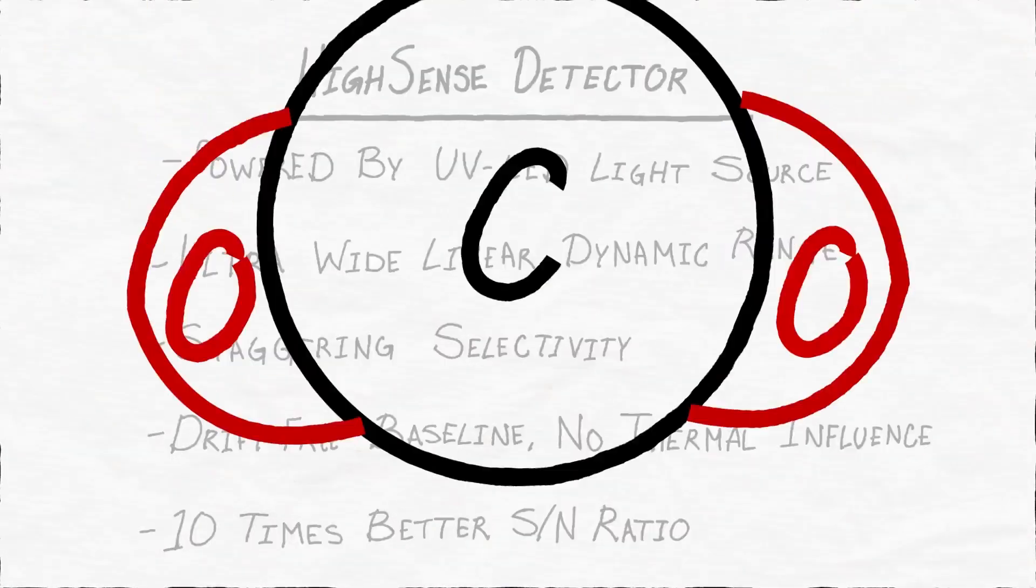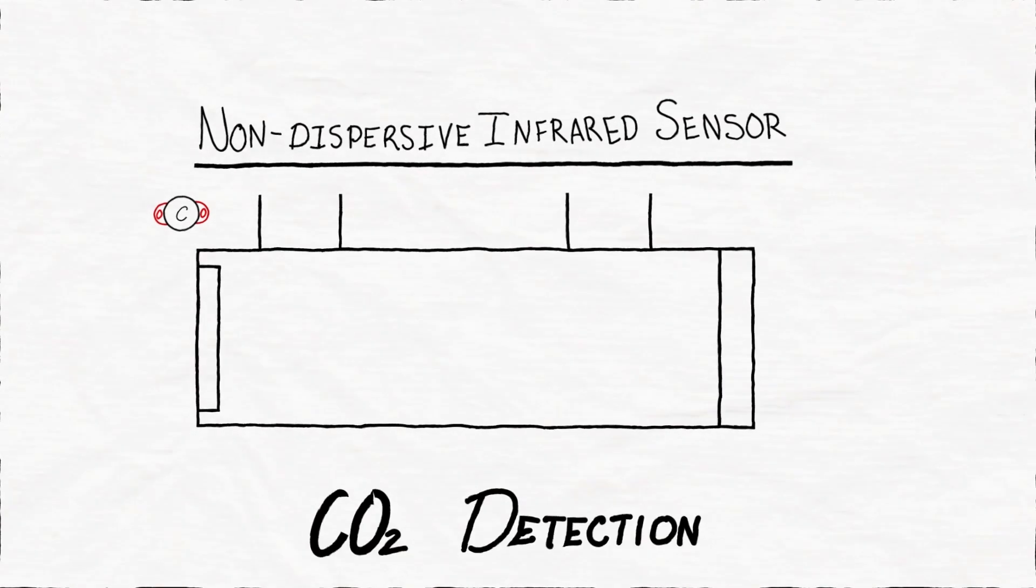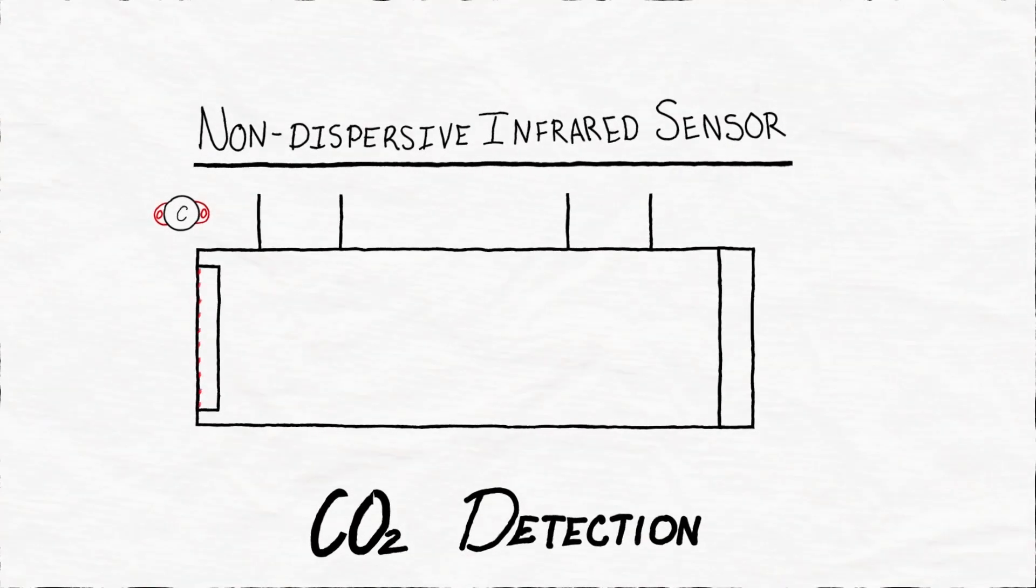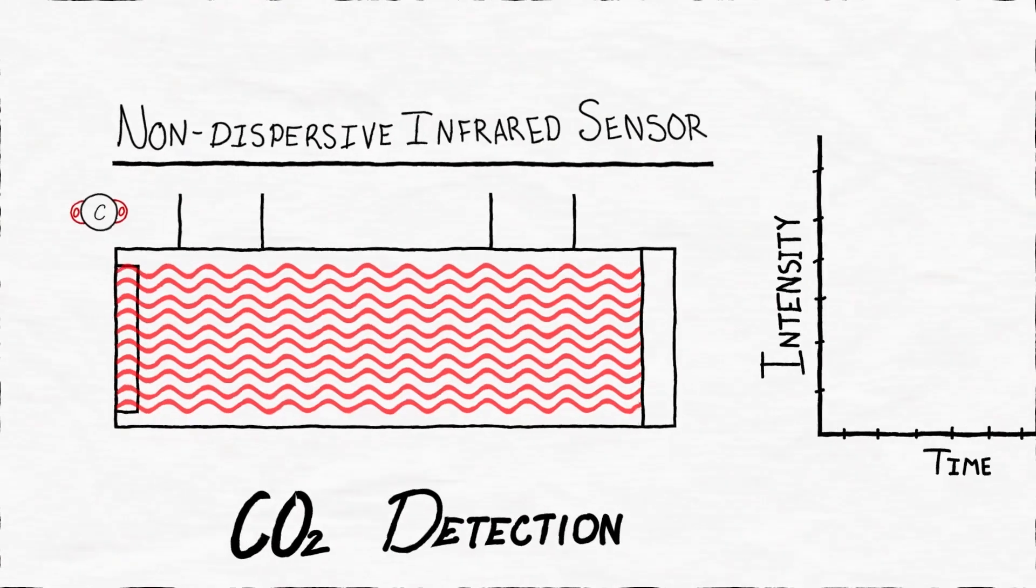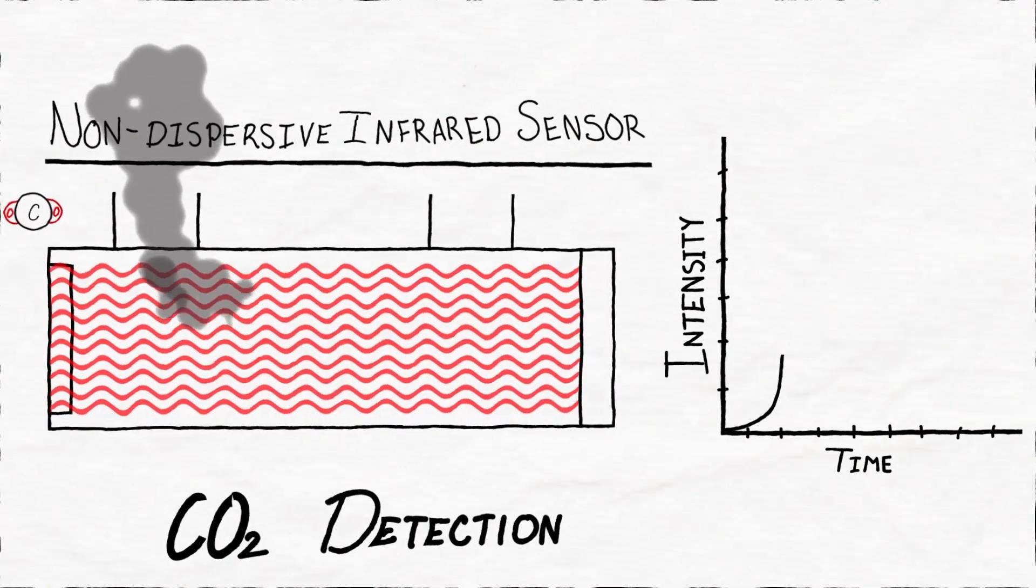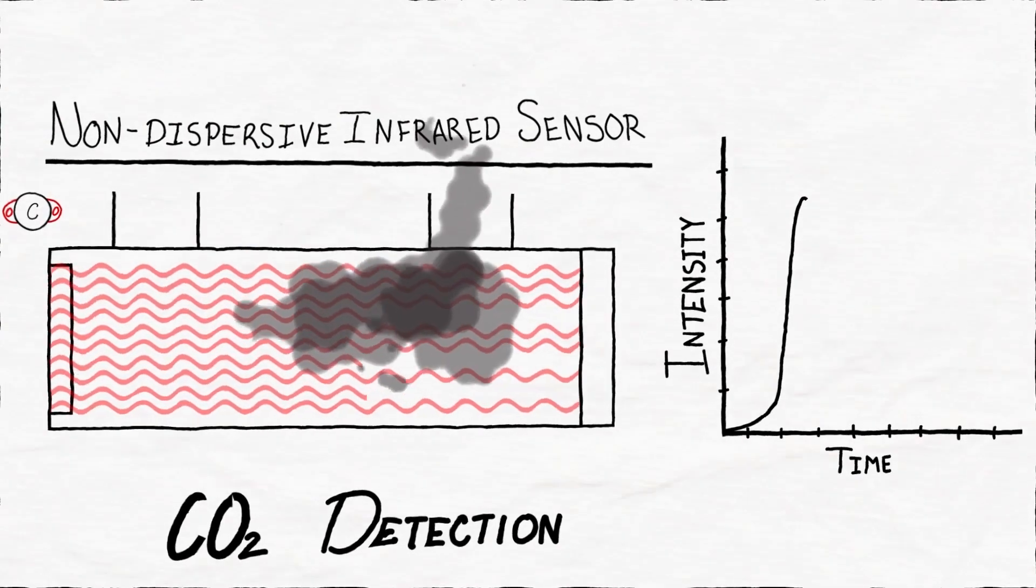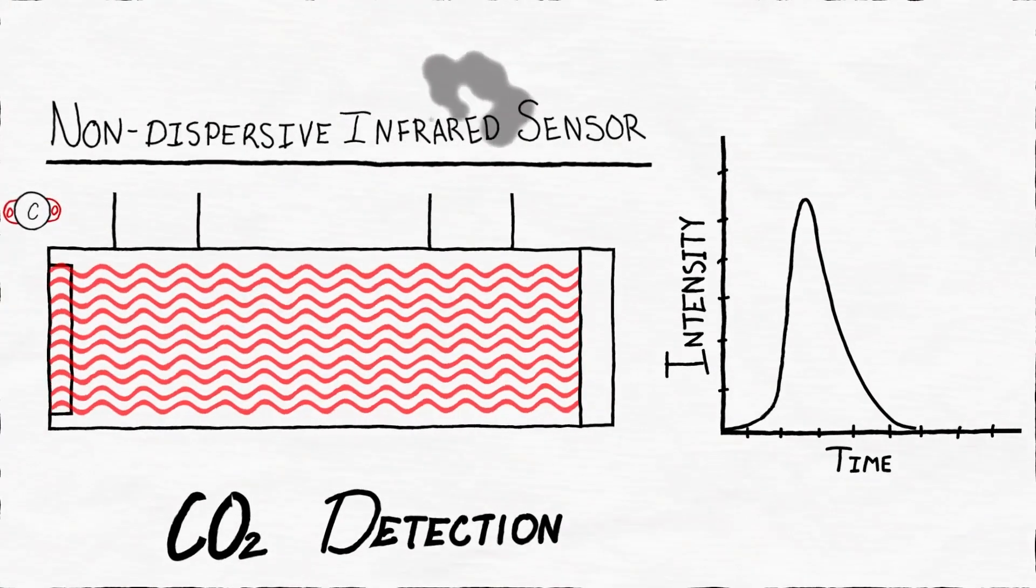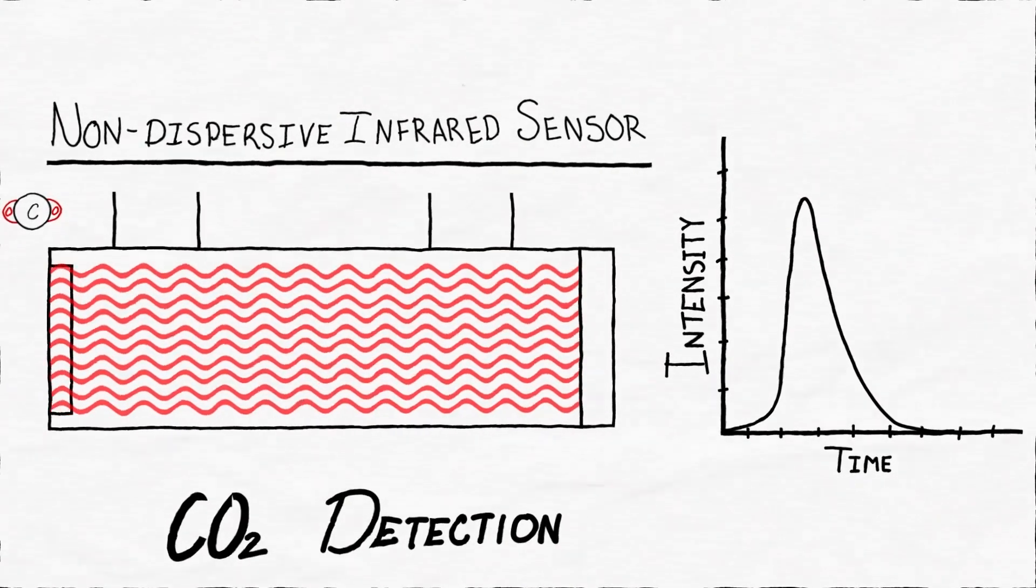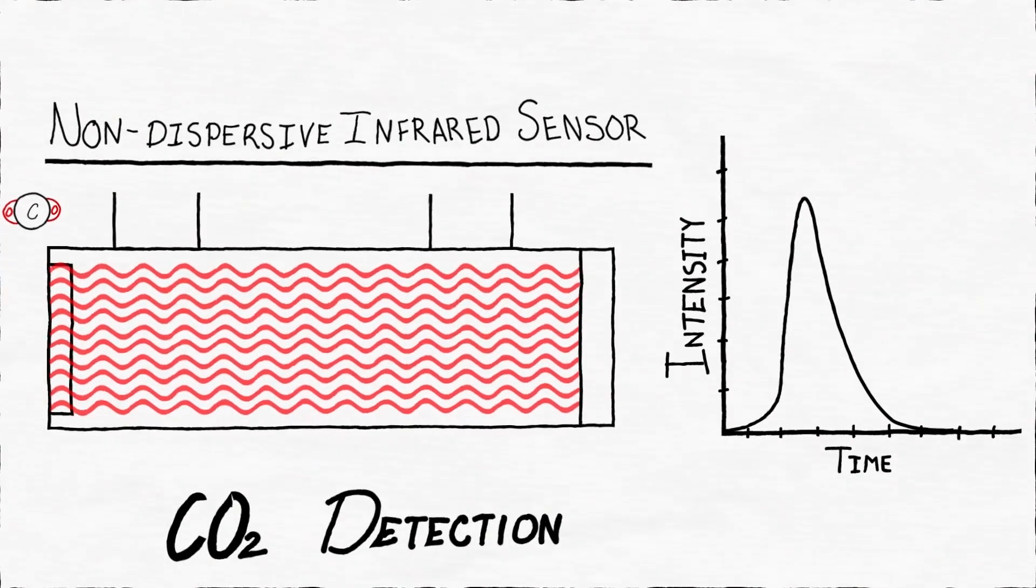In much the same way that sulfur dioxide can be detected by observing its absorption of ultraviolet light, carbon dioxide can be detected using infrared light. Using a non-dispersive infrared sensor, specific wavelengths of the IR spectrum excite vibrations of the CO2 molecules in the sample gas and are absorbed. A drop in IR light is measured.